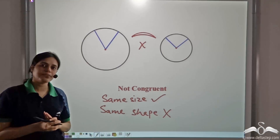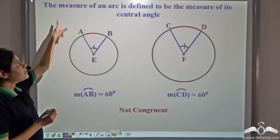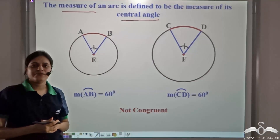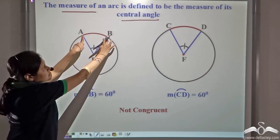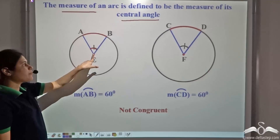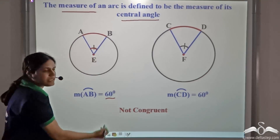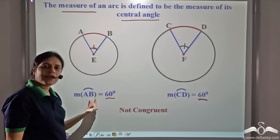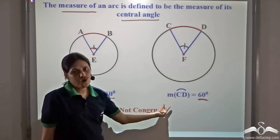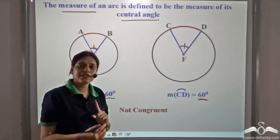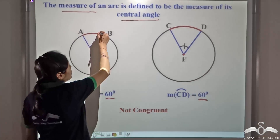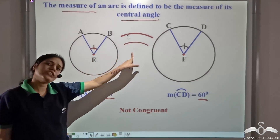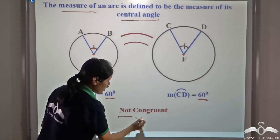When will two arcs be of the same shape? There is something called the measure of an arc — the measure of an arc is the angle subtended by the arc at the centre, that is, its central angle. The measure of arc AB is 60 degrees in this case, and the measure of arc CD is also 60 degrees. So arc AB and arc CD are of the same shape. But observing these two arcs, they are of the same shape but not the same size — hence they are not congruent.